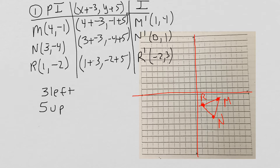The easiest way to do this and check it at the same time is to start at R. You're going to go 3 to the left and then up 5, and that point should be negative 2, positive 3, and that is R prime.